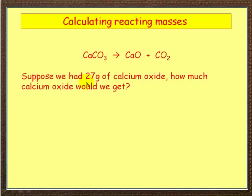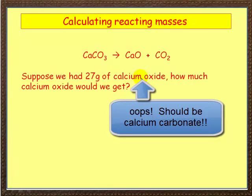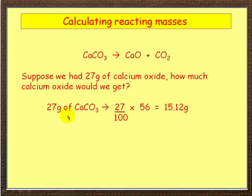Now suppose we had 27 grams, not 100 grams, but 27 grams of calcium oxide, how much - sorry, calcium - that's a mistake isn't it? Suppose we had 27 grams of calcium carbonate, how much calcium oxide would we get? Oh, a typo error there, never mind. Now 27 grams of calcium carbonate, OK?